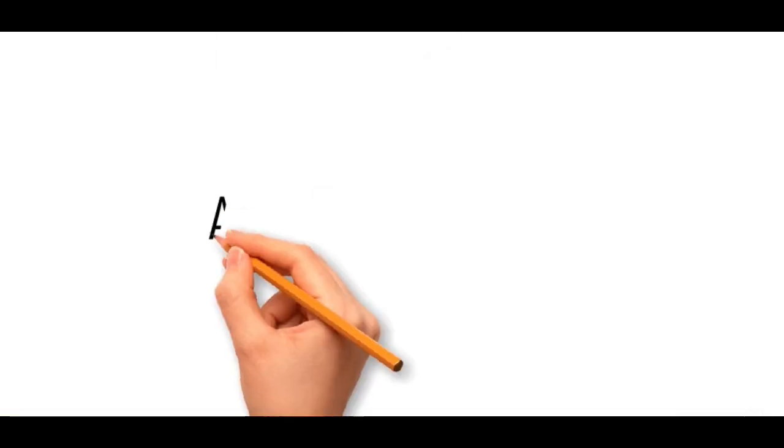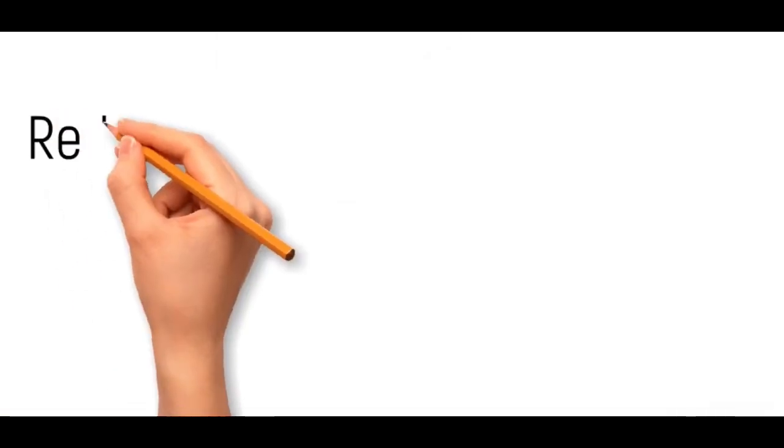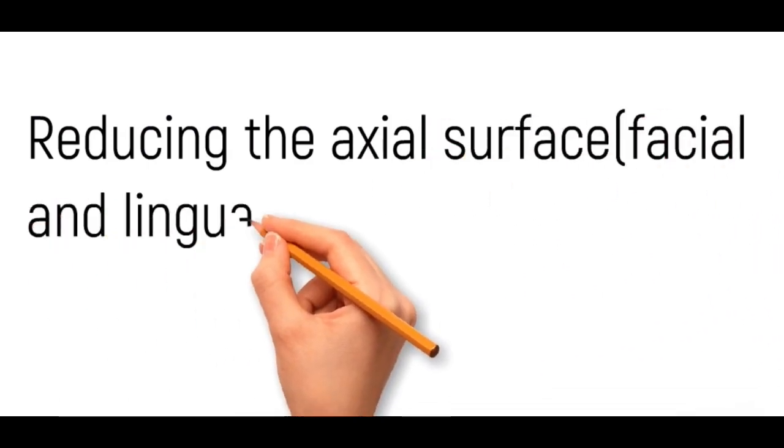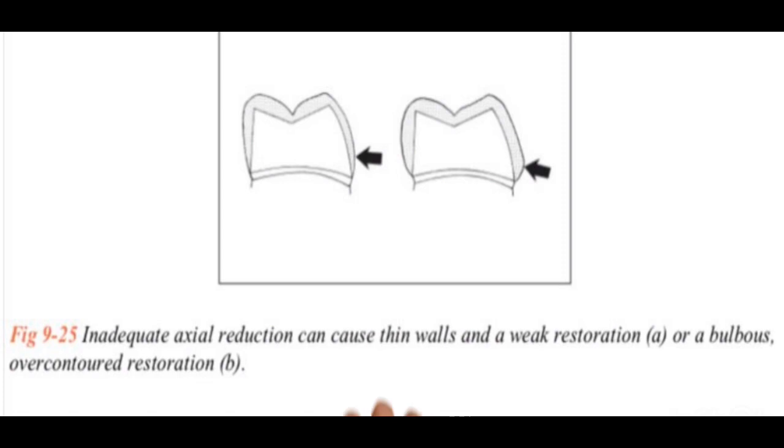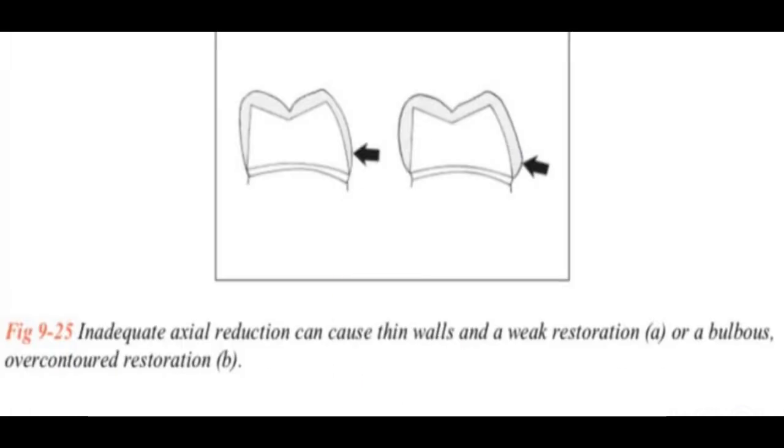Let's talk about axial reduction, reducing the axial surfaces. By axial surfaces we mean facial and lingual surface. If the restoration is made with normal occlusal reduction and a functional cusp bevel but with inappropriate or inadequate axial reduction, they will have thin axial walls that will be subject to distortion. On the opposite extreme you can see a bulbous over-contoured restoration due to inadequate axial reduction, leading to a weak restoration.